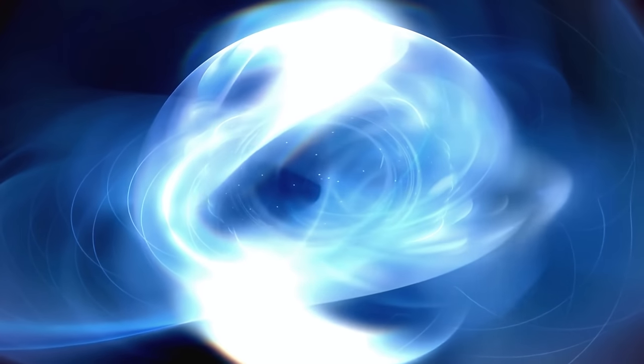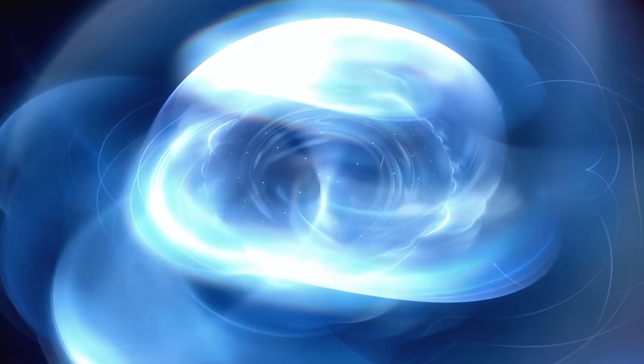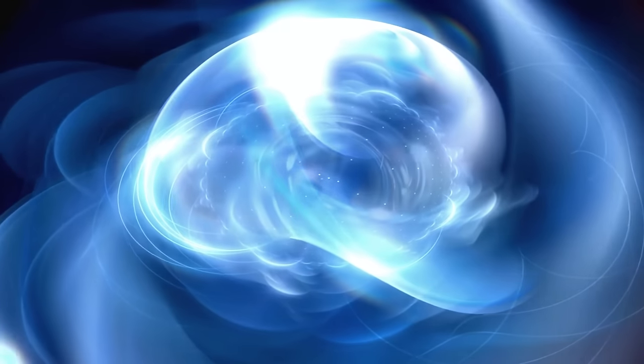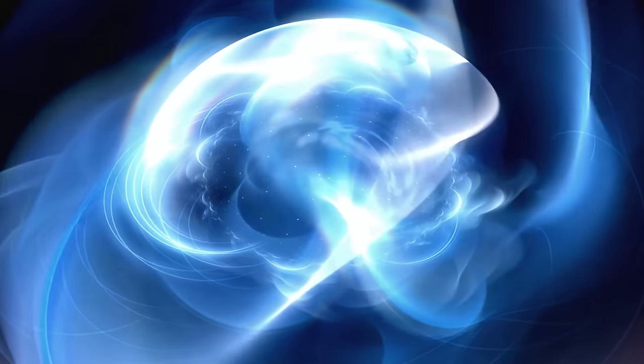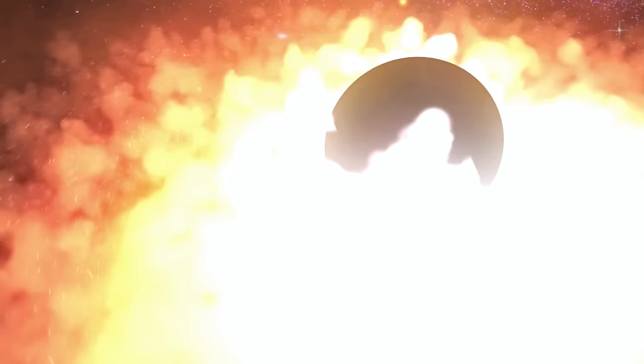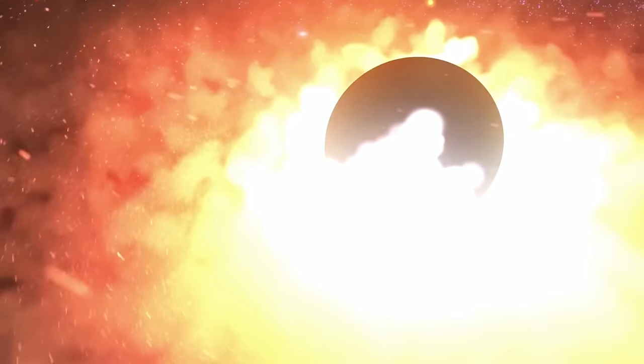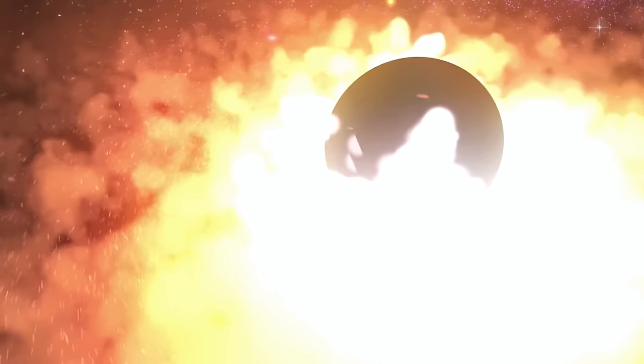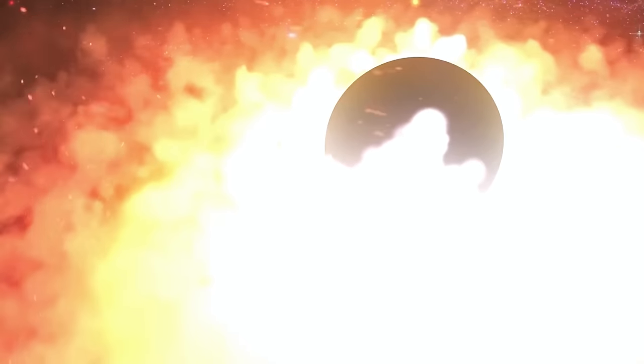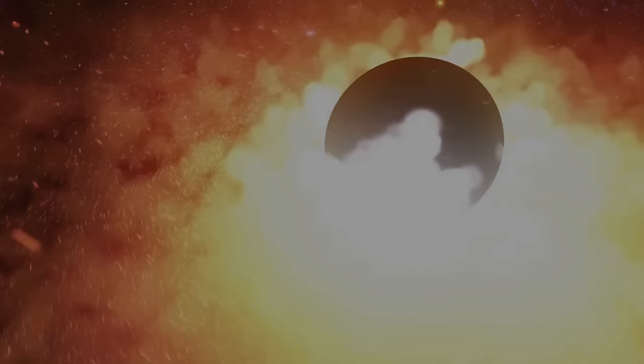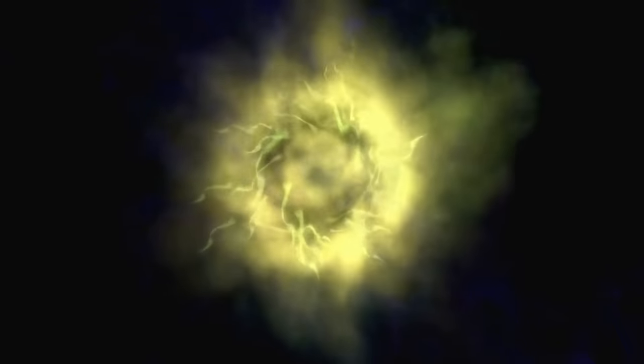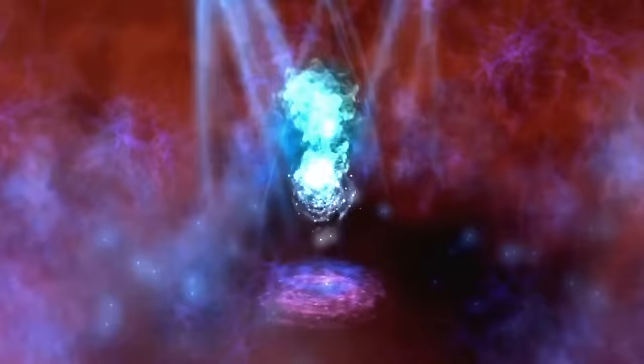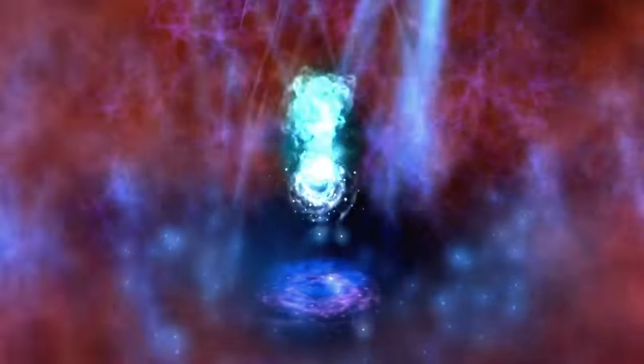However, the peculiar nature of black holes, entities whose gravitational pull is so intense that not even light can escape, complicates this scenario. The energy resulting from the annihilation of matter and antimatter would be instantaneously ensnared by the gravitational grip of the black hole, contributing to its growth rather than diminishing it. Thus, a collision between a matter black hole and an antimatter black hole would not result in their eradication, but in the birth of a larger, more massive black hole.